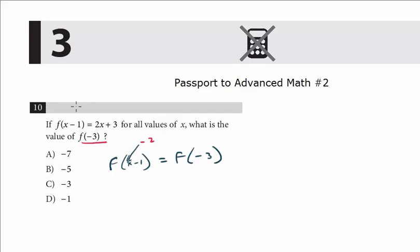So really that's the key for this x here. We're going to put in negative 2 because that will equal f of negative 3. So whenever we see an x, we're going to put in negative 2. So that's just going to be 2 times negative 2. That's negative 4 plus 3. The answer is negative 1.